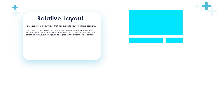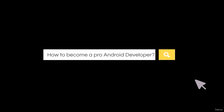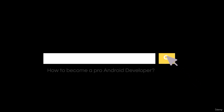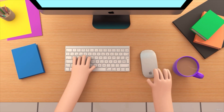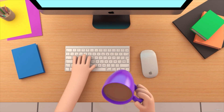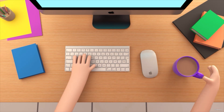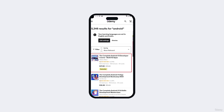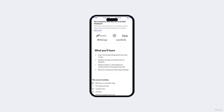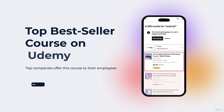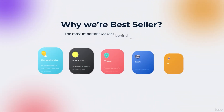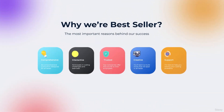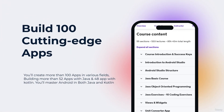Positions can also be relative to the parent RelativeLayout area, such as aligned to the bottom, left, or center. If you want to be a professional Android app developer but don't know where to start or what things to learn, welcome to our top bestseller Android app development course — a comprehensive program designed to equip you with the skills and knowledge required to excel in Android app development.